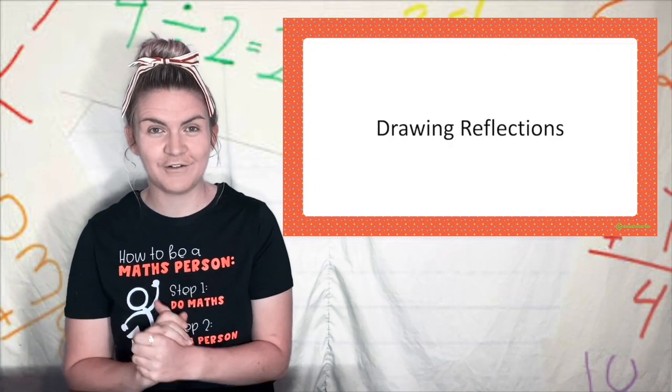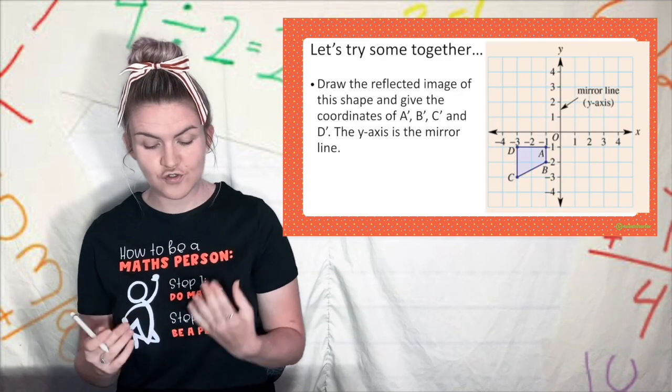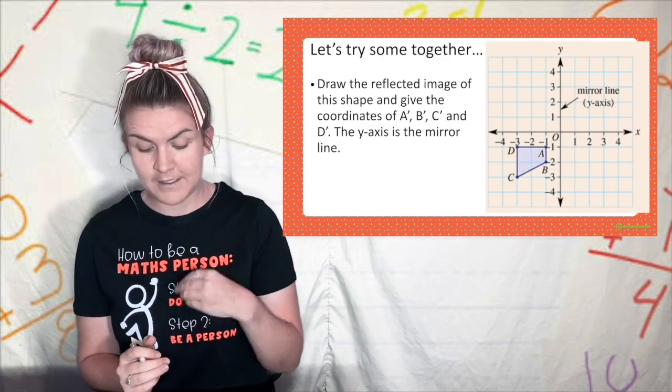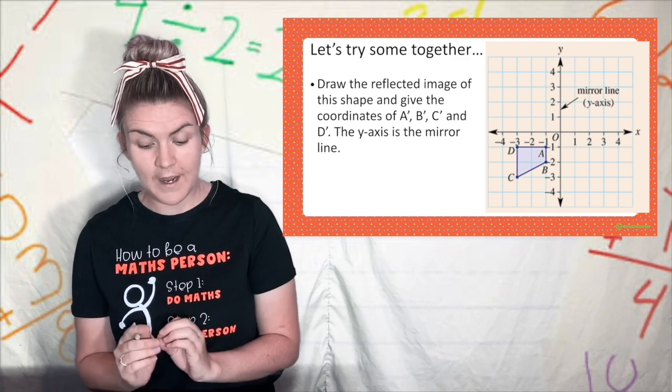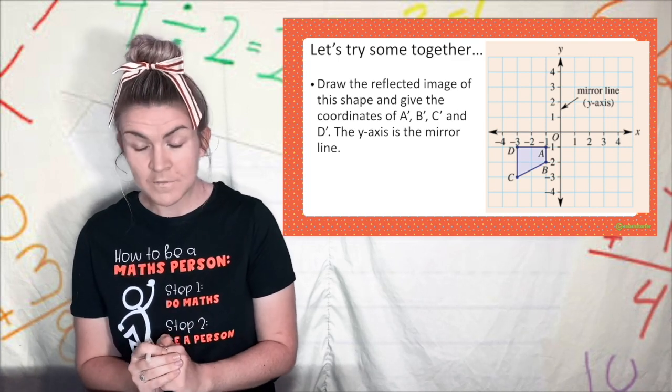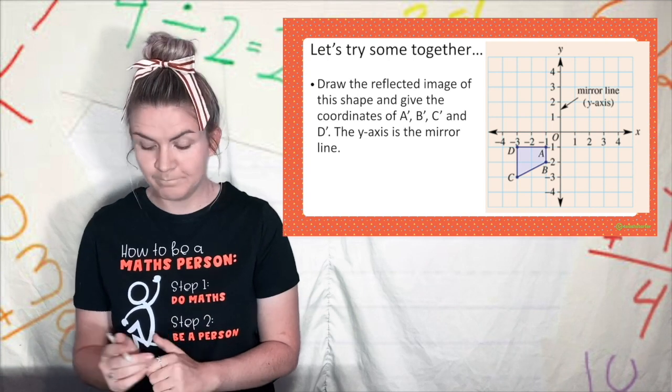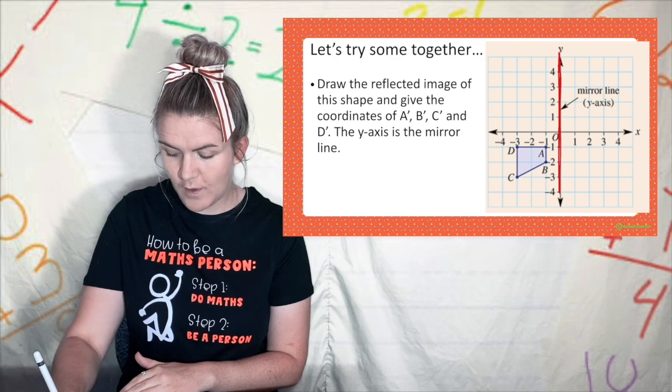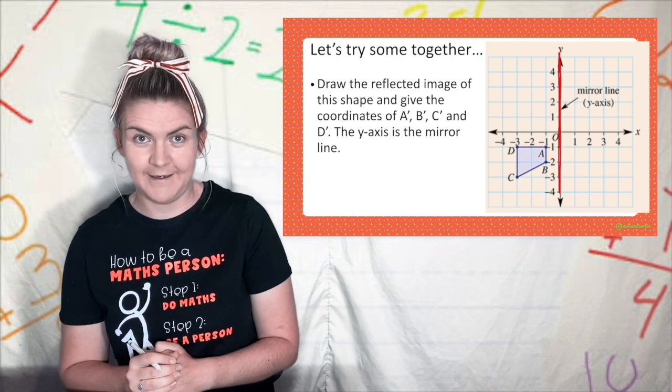Let's have a go at drawing reflections. It says draw the reflected image of this shape and give the coordinates of a, b, c and d prime. The y-axis is the mirror line. I like to highlight my mirror line so I'm going to drag and highlight that this y-axis is where my mirror line is.